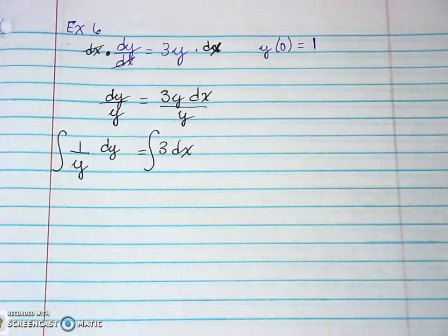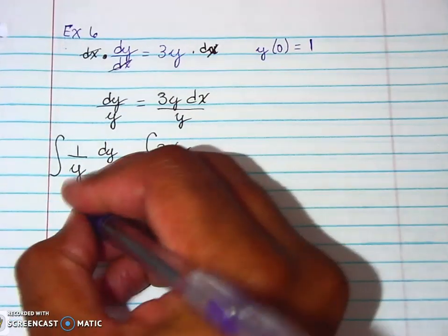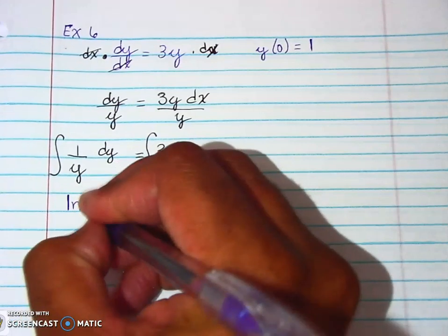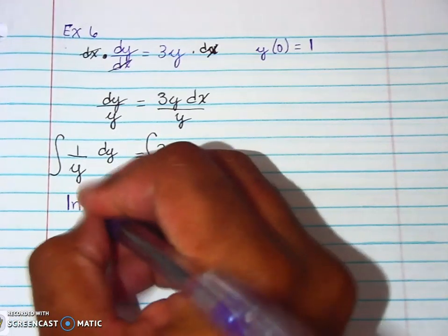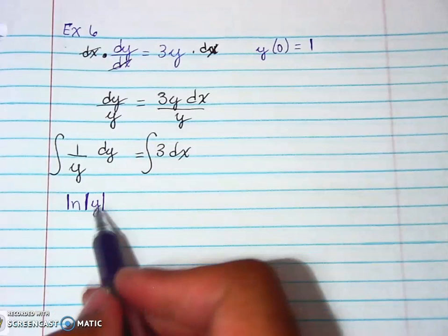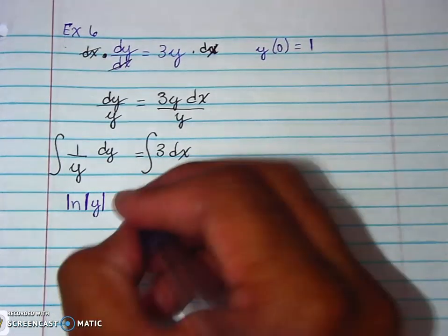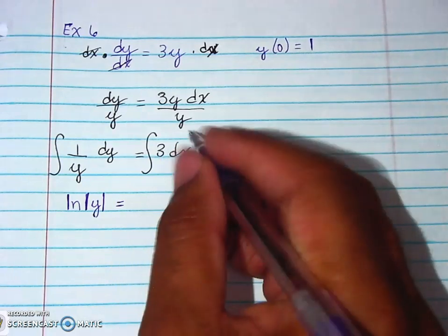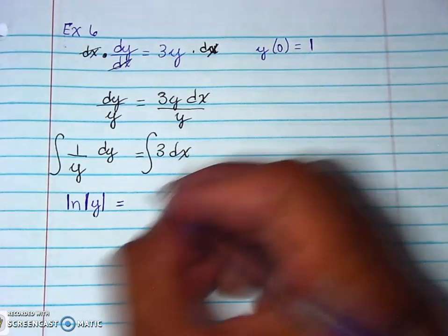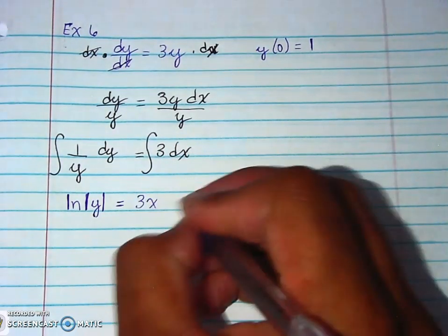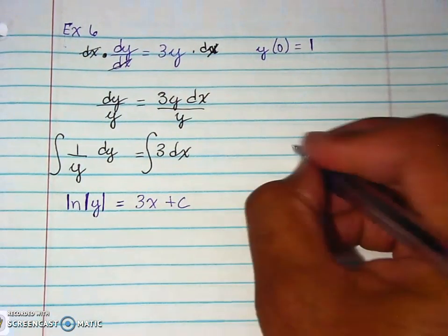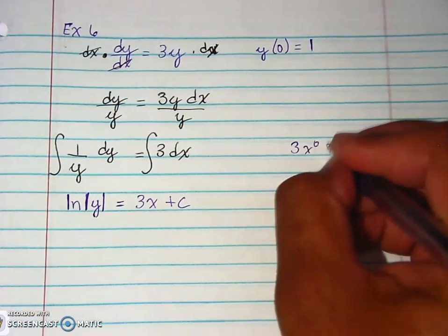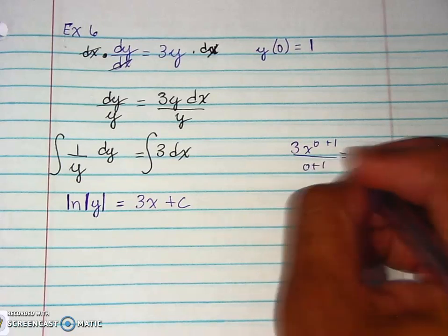So here this is natural log of absolute value of y. Remember the y value has to be a positive value, it cannot be negative. Here, x to the zero power means we have 3x plus C. Remember x to the zero power gives us 1, divided by 0 plus 1 gives us 3x.